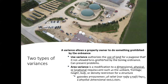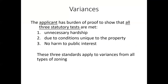The second type — and what we'll talk about most tonight — are area variances. These are dimensional variances: roadway setbacks, water setbacks, side yard setbacks. Court cases say area variances provide an increment of relief, normally small, from a physical dimensional restriction. For all variances, whether general zoning or shoreland zoning, the applicant has the burden of proof to show that all three tests from Wisconsin state statutes are met: unnecessary hardship, that it's due to conditions unique to the property, and that there will be no harm to the public interest.